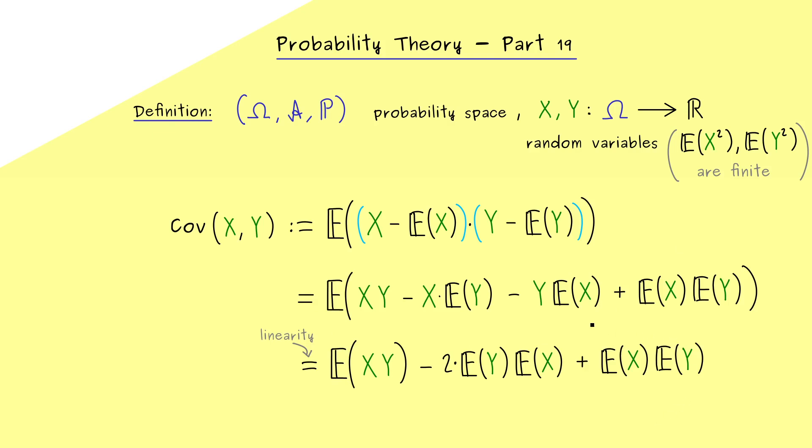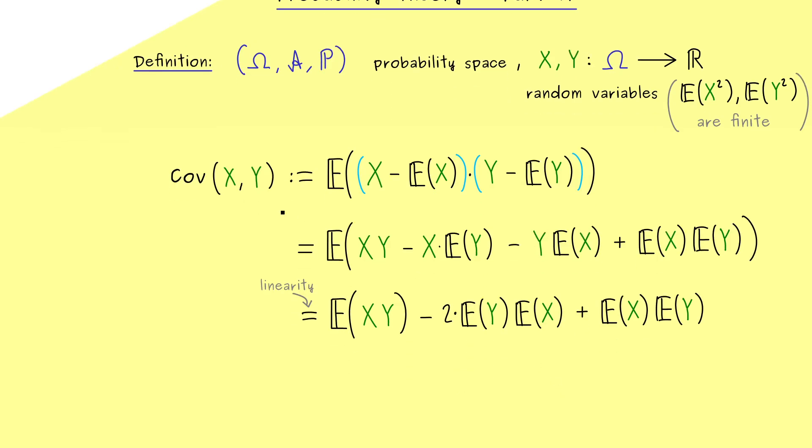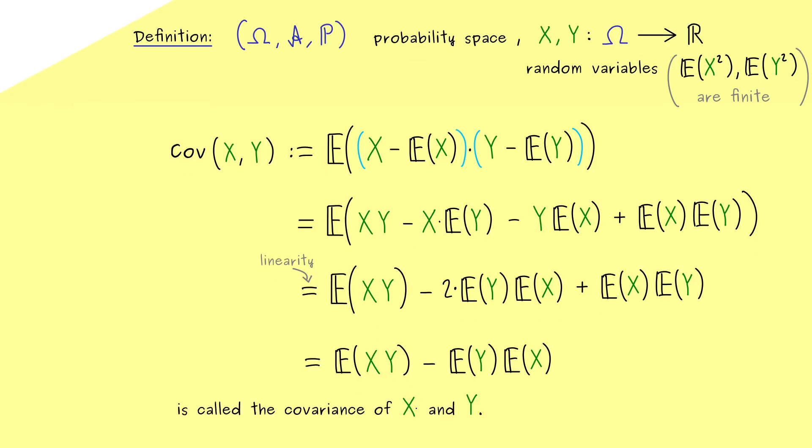However, now you see, we can put both terms together and we get a very nice short formula for the covariance. So you can remember, it's the expectation of the product minus the product of the expectations. So again, by our assumption, this real number is well defined and called the covariance of X and Y.